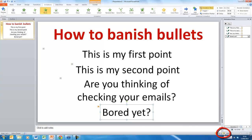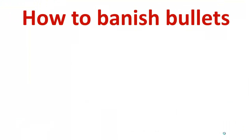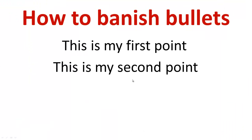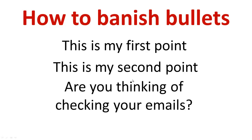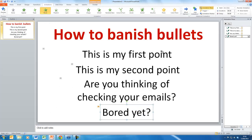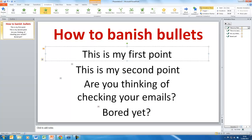If I now click to show the slide show for this particular slide, we can see that as we click the mouse the first point appears, then click again for the second point, third point, and then fourth point. So they're all coming in. But what we also want them to do is disappear as well.